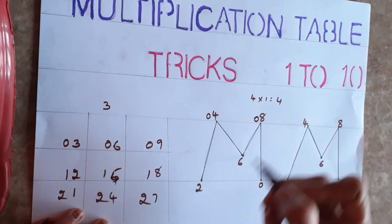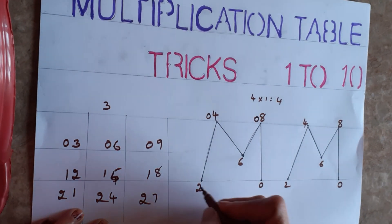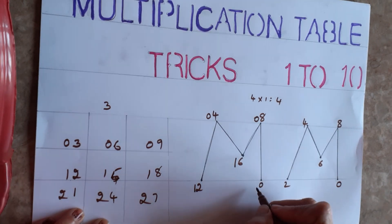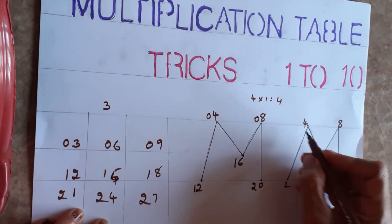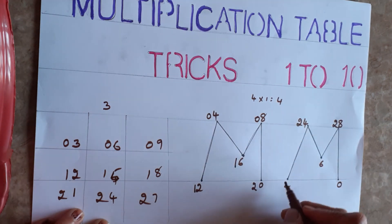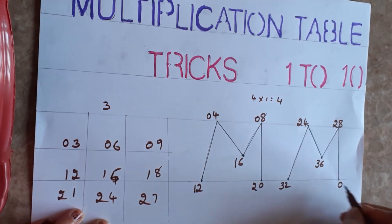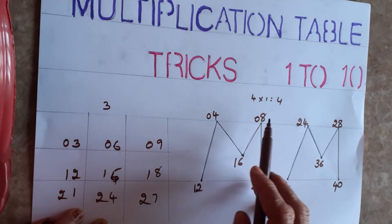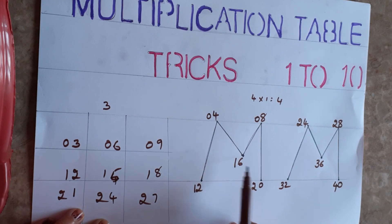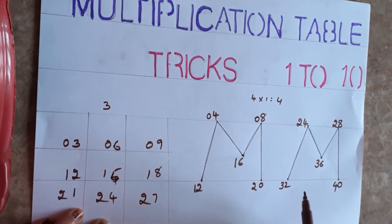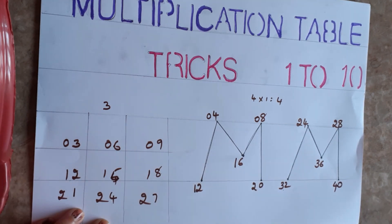After writing the even numbers, fill in: zero, then one, then two — continue two here as well — then three, then four. That's all for the fourth table. See: 4 ones are 4, 4 twos are 8, 4 threes are 12, 4 fours are 16, 4 fives are 20, 4 sixes are 24, 4 sevens are 28, 4 eights are 32, 4 nines are 36, 4 tens are 40.